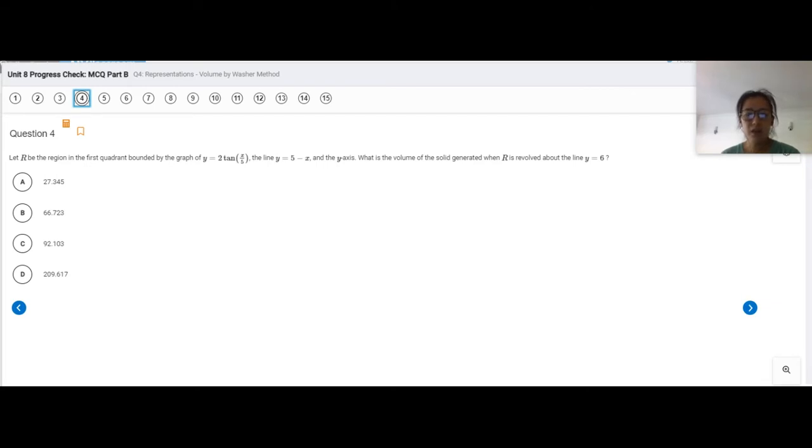What is the volume of the solid generated when R is revolved around the line Y equals 6? So to start with, in general, what I want you all to always notice first thing is whenever they say first quadrant.